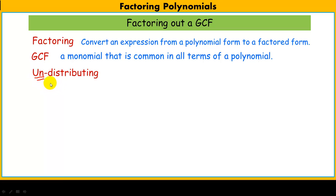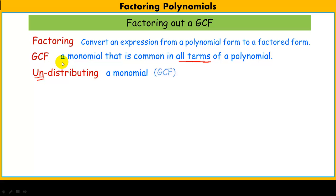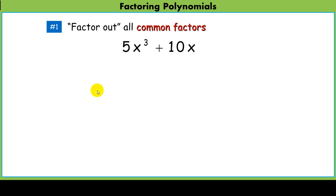We can think of it as undistributing something. What we're going to be undistributing is a monomial that will be in all terms — we are going to undistribute that greatest common factor. So our first problem is the binomial 5x cubed plus 10x.